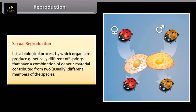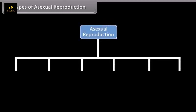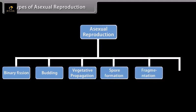Do you know how organisms reproduce asexually? An organism may reproduce asexually by binary fission, budding, vegetative propagation, spore formation, fragmentation, and parthenogenesis.